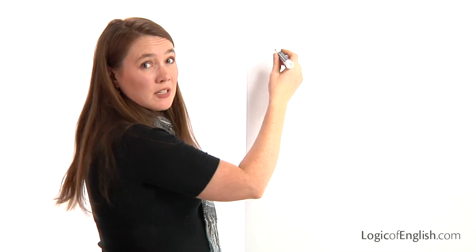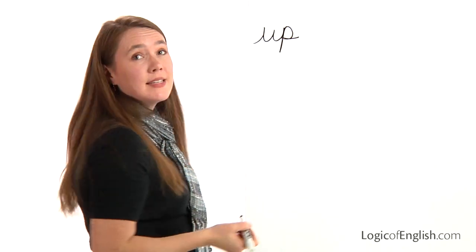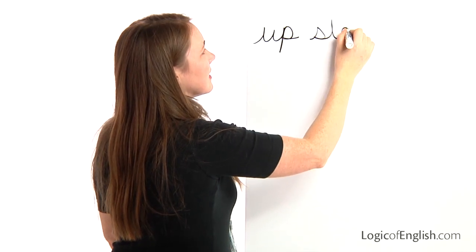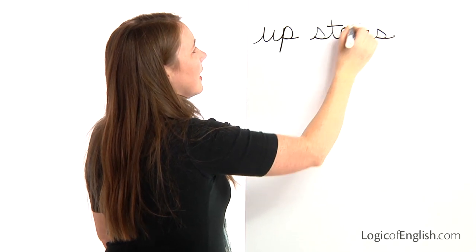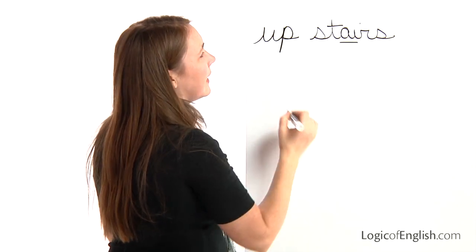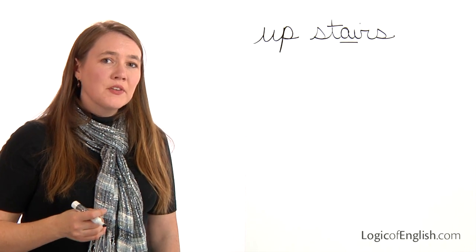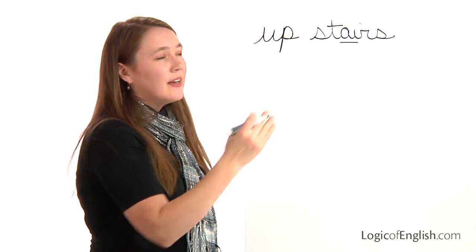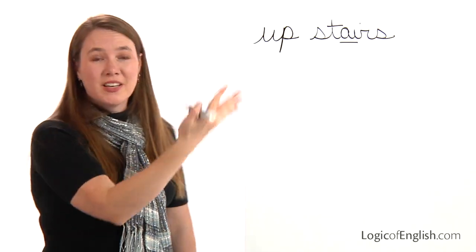The next word is 'upstairs.' Ella's bedroom is upstairs. Two syllables: first is 'up' — u, p; second is 'stairs' — S, t, ai, r, z. Go ahead and write upstairs. Help me write it: u, p — S, t, ai, r, z. We'll underline the two-letter ai. What two words combine to make upstairs? Up and stairs — stairs are steps, and upstairs means something up the steps.